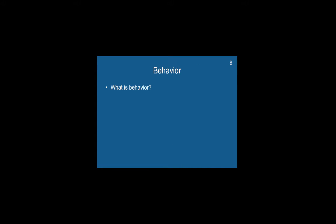We've gone through a little bit about the basics of the brain, but now we're going to talk a little bit more about behavior. What exactly is behavior? Behavior primarily consists of patterns in time. You wouldn't really think of this definition if someone was to ask you about a behavior, but at a very fundamental level, that's what it is. Any behavior that you engage in is going to be a pattern of some sort across time.